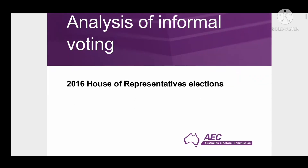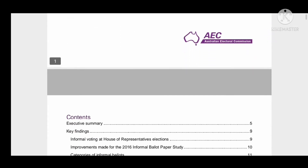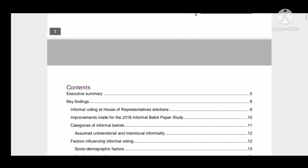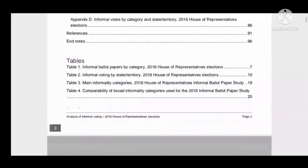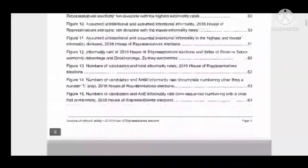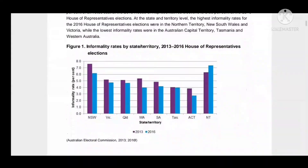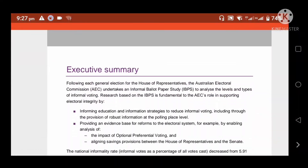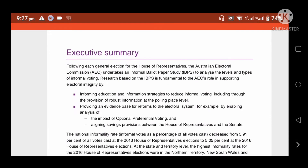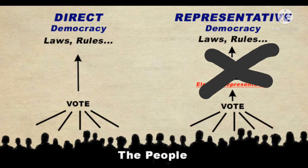As the Australian Electoral Commission study attempted to make a distinction between informal votes that could have been a mistake and those that appear to show the voter did not wish to vote for any candidates.